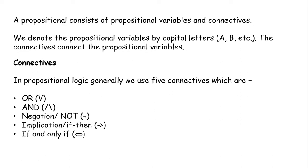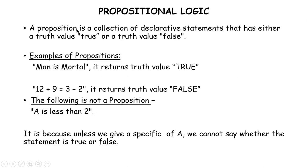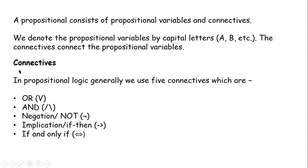A proposition basically consists of propositional variables and connectives. Any declarative statement consists of two important elements: propositional variables and connectives. These connectives connect the propositional variables. All propositional variables are denoted by capital letters — A, B, C, etc. Propositional variables plus connectives together give you a proposition.